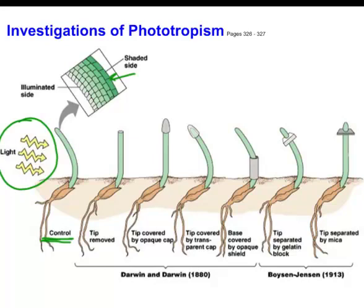One of the experiments they did was: if you chop off the tip, no bending occurs. That tells us that whatever is controlling the bending is located up in the tip, and if you remove the tip you lose that control. They also found you could do the same thing by just covering the tip with an opaque cap — something that would block out light.